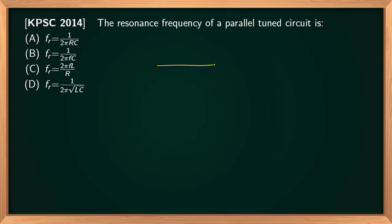If you consider a parallel tuned circuit, it consists of an inductor and capacitor that are connected in parallel. When we apply an input signal, it will produce a sustained oscillation in the circuit, so current in the circuit will be oscillatory.